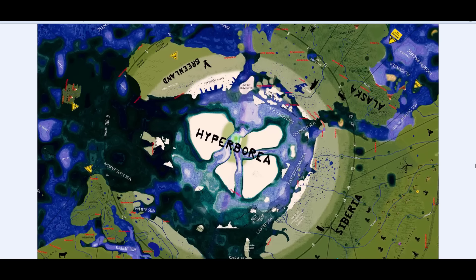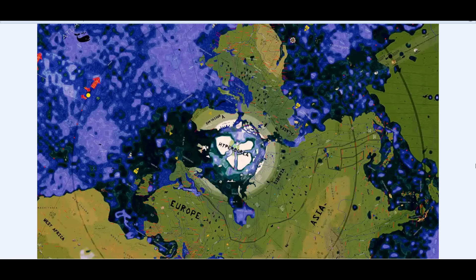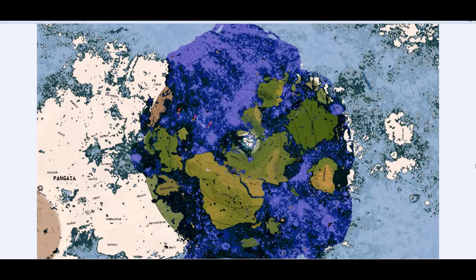We start with Hyperborea, which is the magnetic north. On the typical Gleason map we zoom out to Europe, and this is what we would know as the Gleason map. All this area of dark blue is what the Gleason map shows.